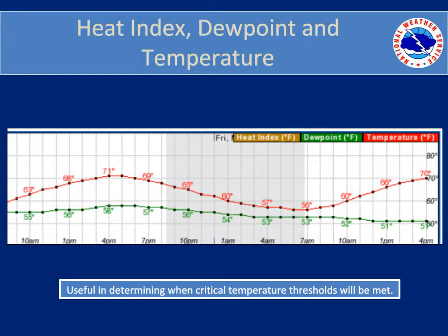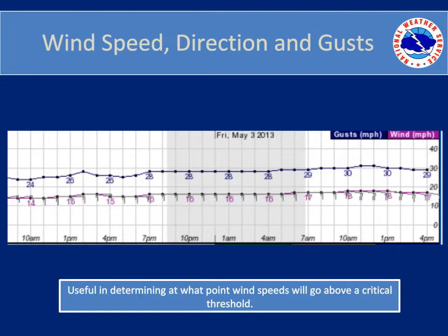What other uses can you think of for temperature, heat index, and dew points? The second section of the hourly weather graph includes wind speed, direction, and gusts. Note the values are displayed in miles per hour. For fire weather users, 15 mph is a critical threshold — these users can see when the 15 mph threshold is met and how long winds will be above 15 mph. For hazmat situations, decision makers can find out the wind speed and direction expected for each hour and see when the wind is expected to shift. In this case, easterly winds — meaning winds from east to west — are expected for the entire forecast.